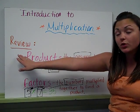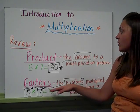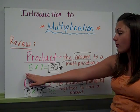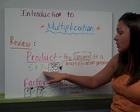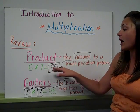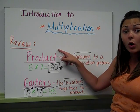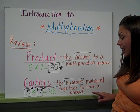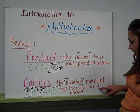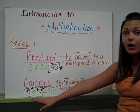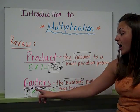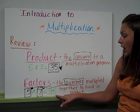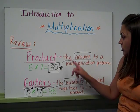Some terms I want to review with you are product and factors. The product is the answer to a multiplication problem. So in our problem, 5 times 7 equals 35, 35, the answer is what we call a product. Factors are the numbers that you multiply together to find a product. So in our same problem, 5 times 7 equals 35, 5 and 7 are our two factors that we're multiplying together to find the product of 35, which is the answer.